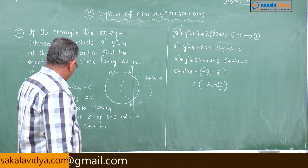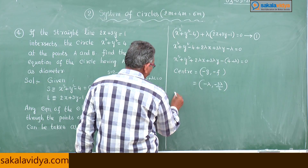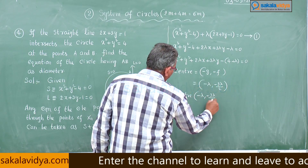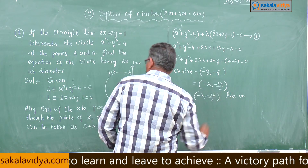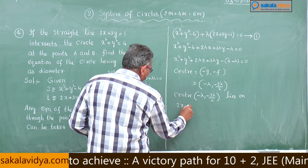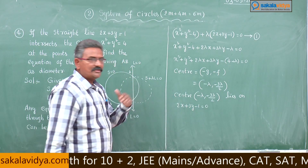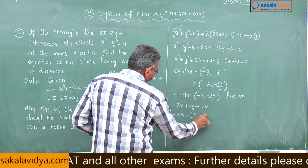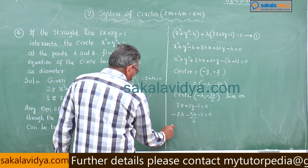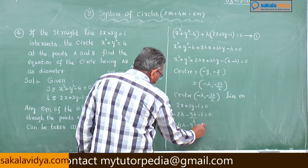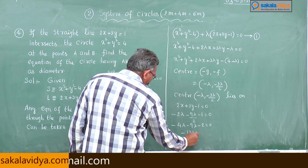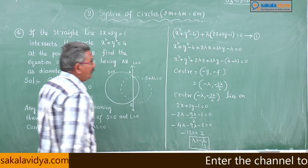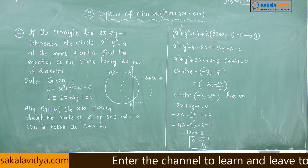According to the problem, this centre lies on the line l. So the centre (−λ, −3λ/2) lies on 2x + 3y − 1 = 0. Substituting: −2λ − 9λ/2 − 1 = 0, which gives −13λ/2 = 1, so λ = −2/13. The lambda value has been obtained.